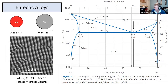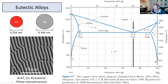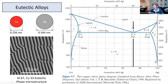Here's another binary phase diagram called a eutectic alloy, because it has a eutectic point where the melting temperature is lower than the individual melting temperatures of the individual solids. This is copper and silver. It's not a completely solid solution. On the boundaries, the alpha phase is a solid solution and the beta phase is a solid solution, but at room temperature in the middle you'll have a mixture of phases — alpha and beta.